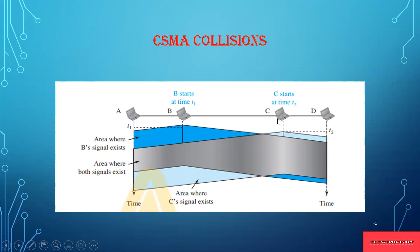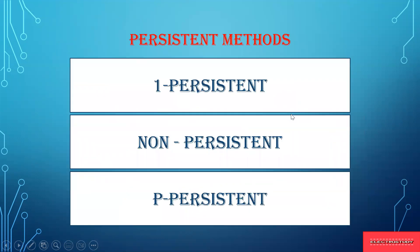Station C has also sensed that a frame is formed and starts sending at a different time interval. Now, how does this collision take place? To handle this there is a method called the persistent method. This persistent method is divided into three types: one-persistent, non-persistent, and P-persistent.